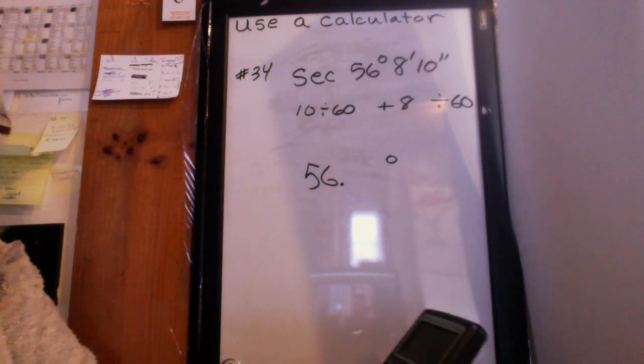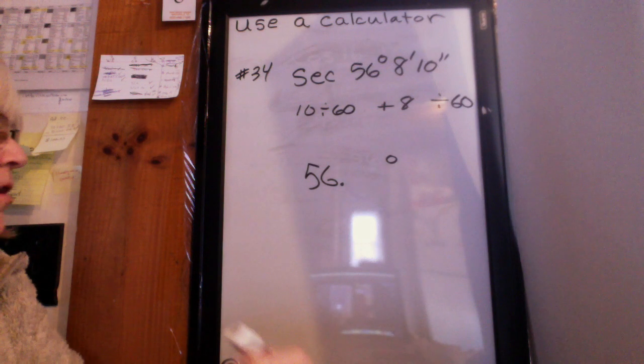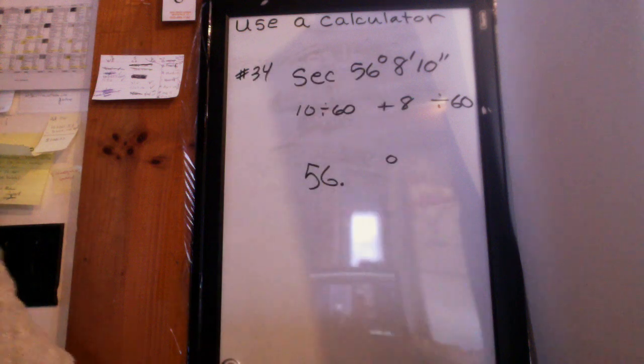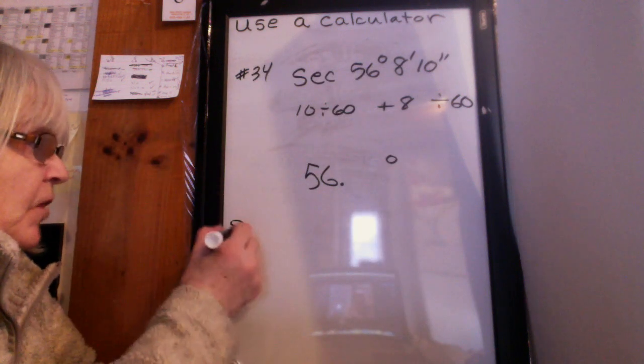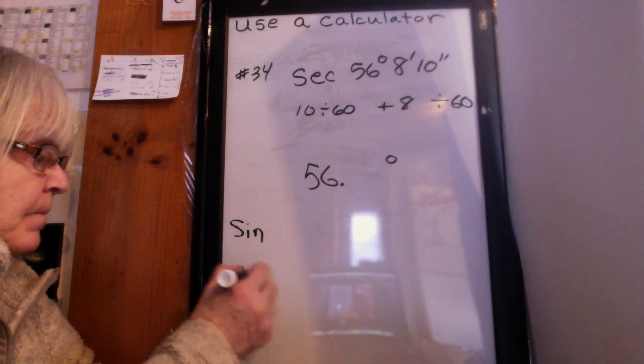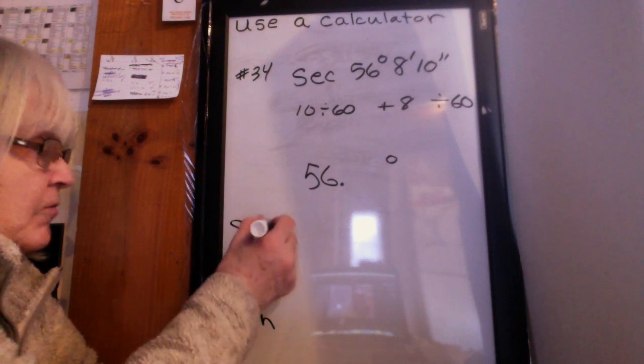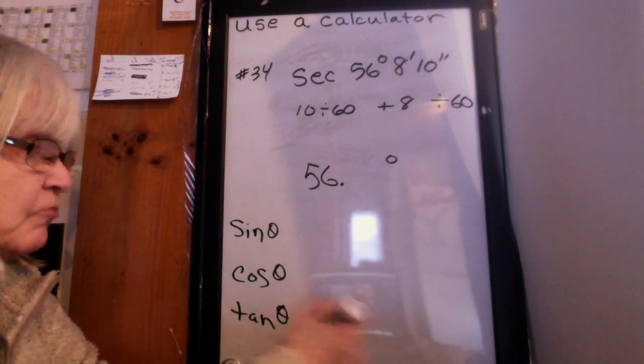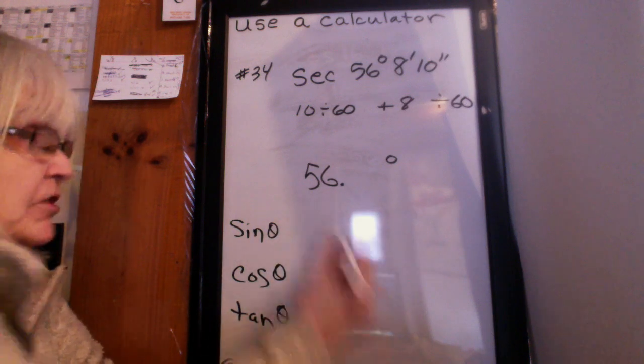I want the secant of that. And then I'm thinking, oh man, there's no secant button on my calculator. What am I going to do? So on the calculator, there's the sine, the cosine, and the tangent. And I don't know if you remember, but when we were doing the six trig functions, I always had you write the partner functions next to them.